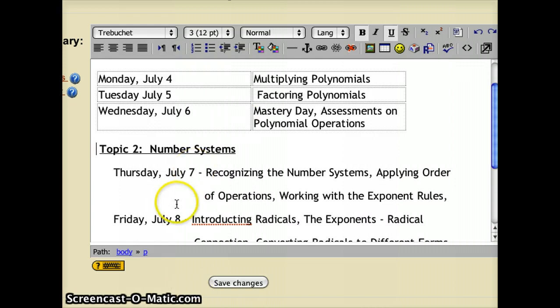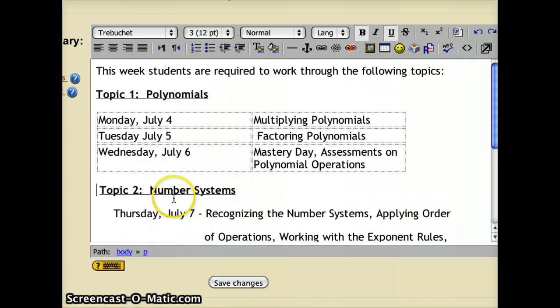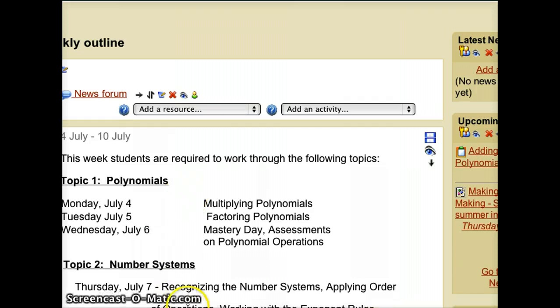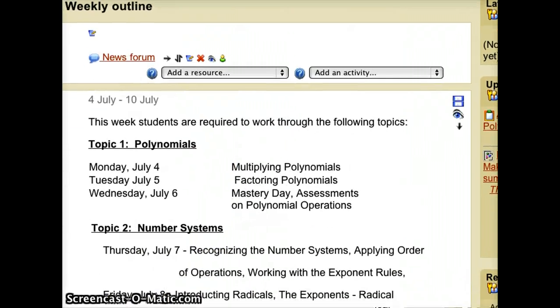Now I can continue to work with the second topic. Once I'm finished, I can just push save. And if I go back now, you can see that the formatting is now much nicer. So Monday July 4th is multiplying polynomials, Tuesday July 5th is factoring polynomials. It still looks a little bit cluttered. It would be nice to have a little bit more space between each of these, and so I'm going to go back and fix that.